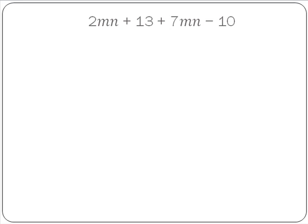Our next example is 2MN plus 13 plus 7MN minus 10. So we have 2MN terms which we add. So 2MN plus 7MN will give us 9MN.